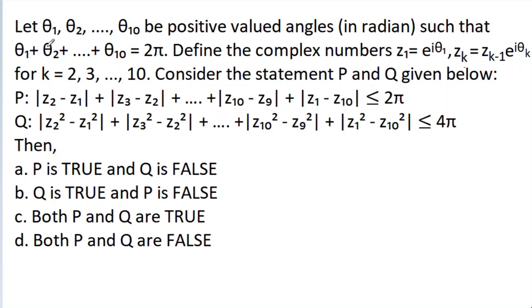In this video, we have given that θ1, θ2 up to θ10 are positive valued angles in radians such that θ1 plus θ2 plus up to θ10 is equal to 2π. We define the complex numbers g1 equal to e^(iθ1) and gk equal to gk-1 times e^(iθk) for k equal to 2, 3, up to 10.